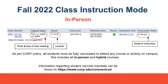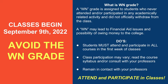Information regarding the student vaccine mandate can be found at www.cuny.edu/coronavirus. Classes will begin September 9th, 2022. Students must attend all classes in the first two weeks to avoid a WN grade. A WN grade is assigned to students who never attend or participate in any academically related activity and did not officially withdraw from the class. A WN grade may lead to financial aid issues and the possibility of owing money to the college.